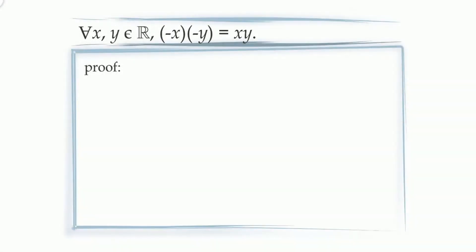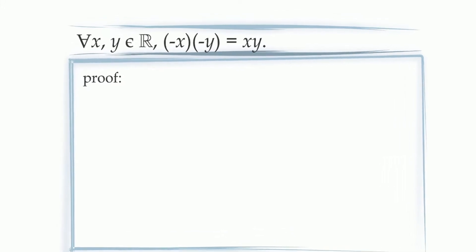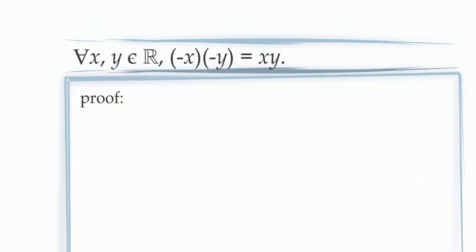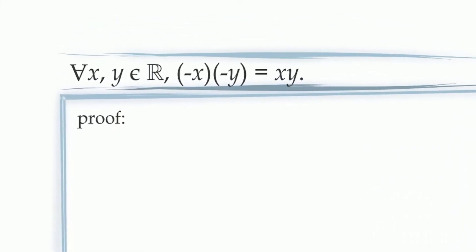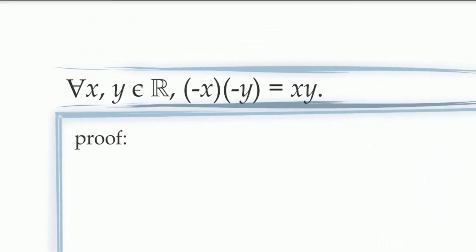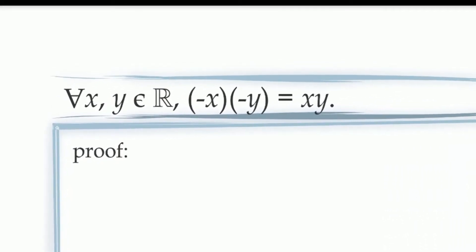In Proposition 3, we're going to show that two negatives cancel one another out. In other words, given any two real numbers x and y, if we multiply the negative of x by the negative of y, it will produce the same result as multiplying x by y.